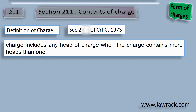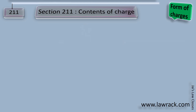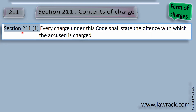It simply means any number of charges will also be called a charge. The very purpose of Section 211 is to inform the accused under which he has been charged, for what offense he has to visit the court, prepare his defense — basically to make him understand what mistake has been done by him under the law of the land. Subsection 1 of Section 211 says every charge under this code shall state the offense with which the accused is charged. So the very first thing is that we have to name the offense under which the accused has been charged.